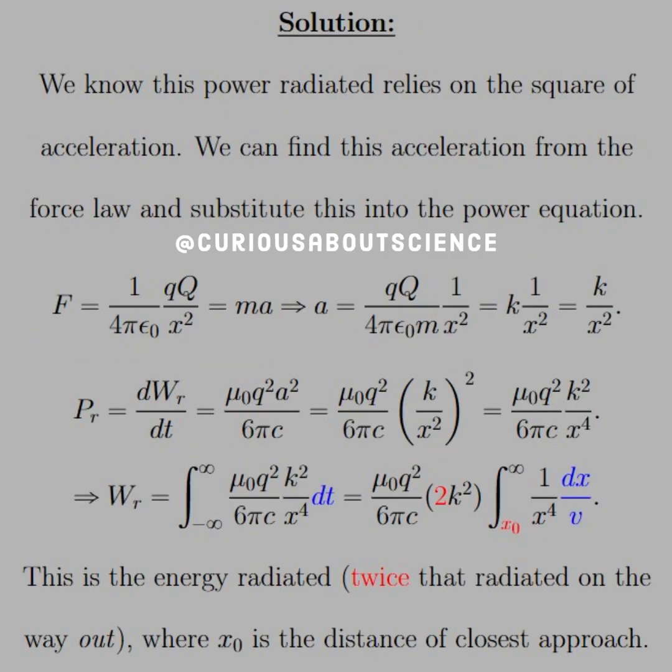The solution: we know that the power radiated relies on the square of acceleration, as told by the Larmor formula. So we can find the acceleration from the force law and substitute it into the power equation. If that's the case, we know what the force of one charge has on the other via Coulomb's law, Q1 Q2. The distance, again, we're assuming is shot in the X direction, just for the sake of clarity. And that tells us F equals MA via force law. So solve for A: we get little q big Q over 4 pi epsilon naught M, 1 over X squared. So we'll just let K equal the constants there.